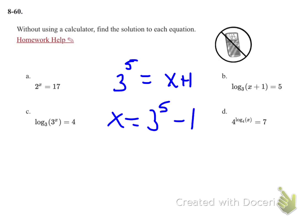Because I would subtract the 1 away from there, 3 to the 5th is going to end up being 243 minus 1, so x is going to equal 242.